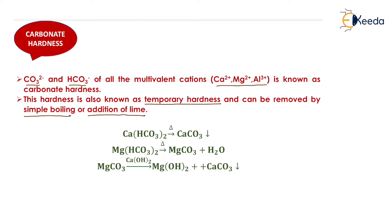Suppose we have hardness due to calcium bicarbonate. When we simply heat that water, calcium carbonate — as a precipitate — will settle at the bottom of the container, and the remaining water will be free from hardness. That is why temporary hardness can be removed by simple boiling.